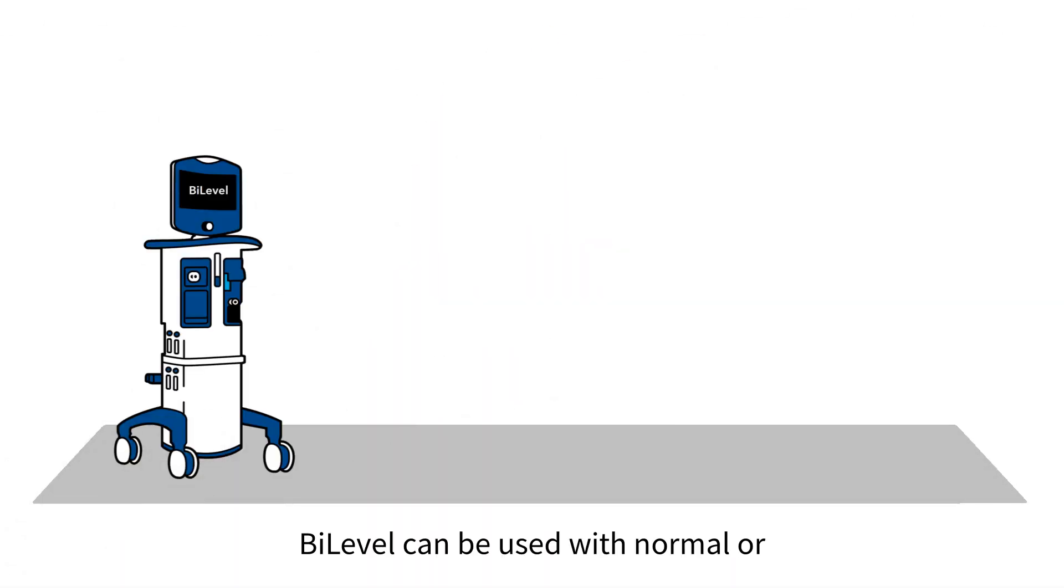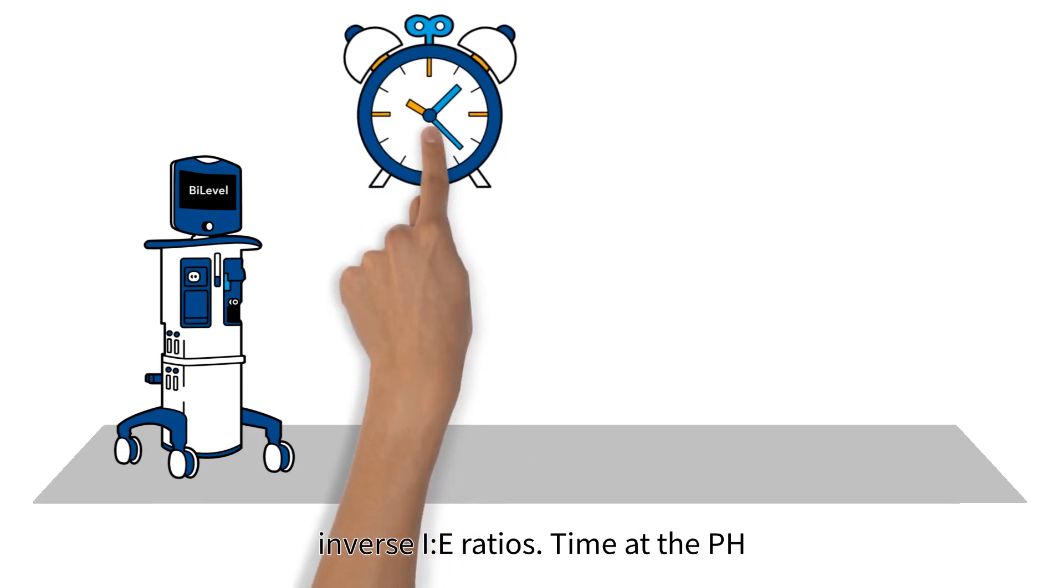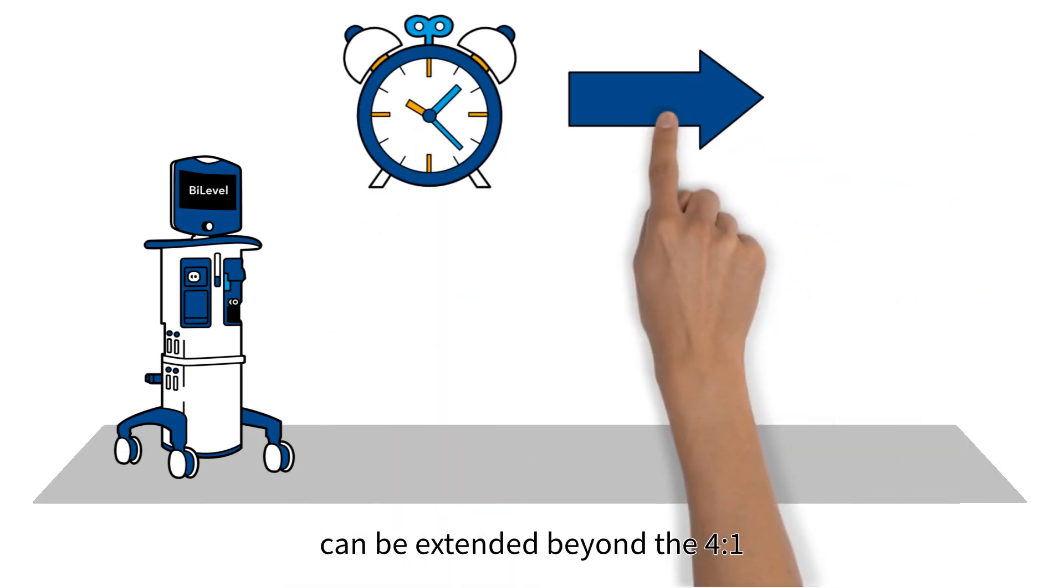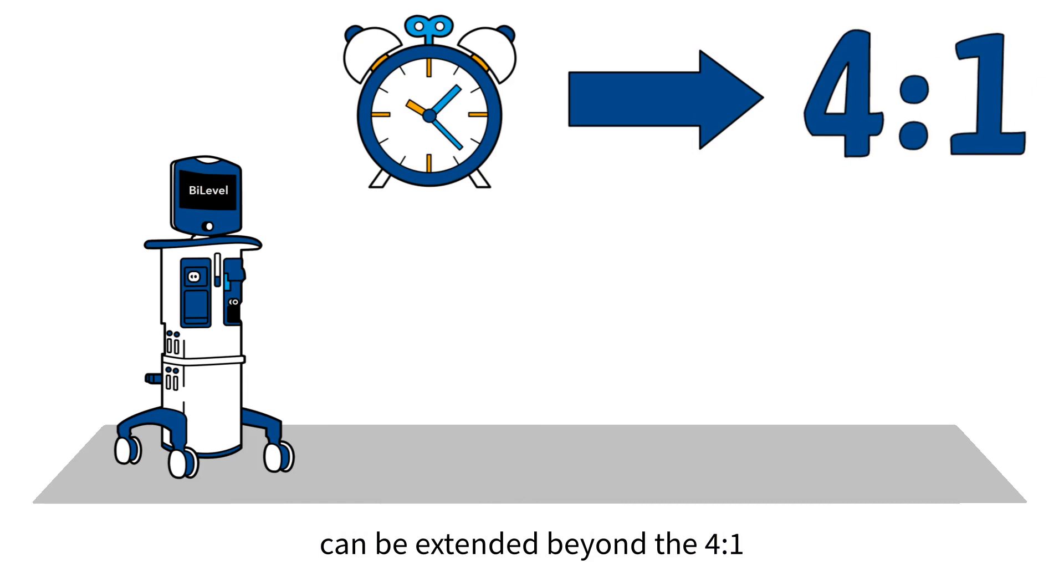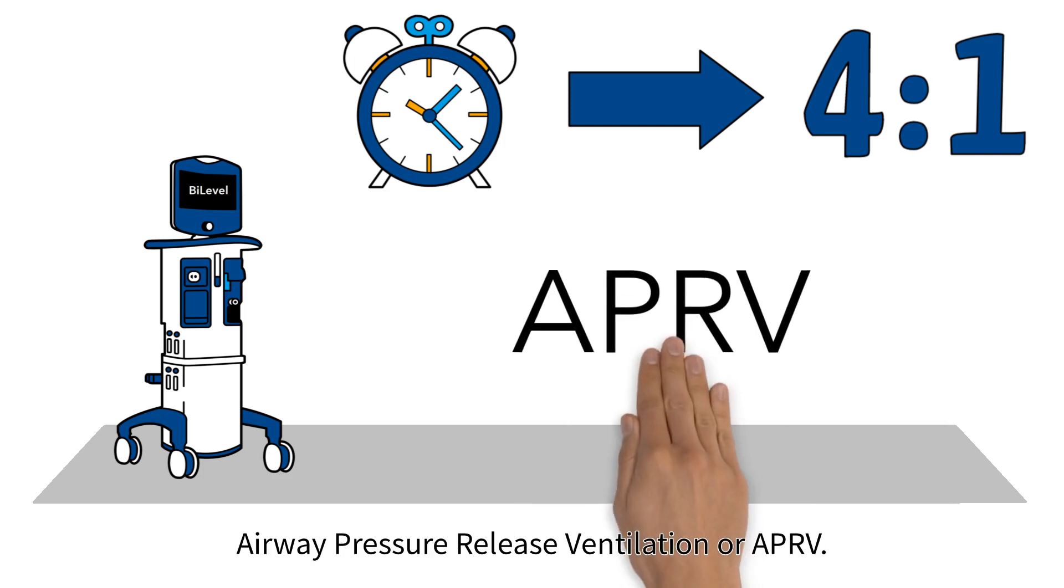Bi-level can be used with normal or inverse I:E ratios. Time at the PH can be extended beyond the four to one limitation of PCV, which is referred to as airway pressure release ventilation or APRV.